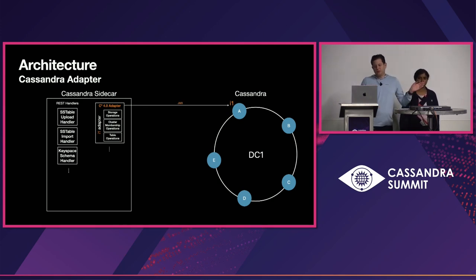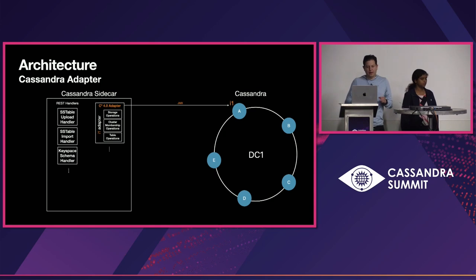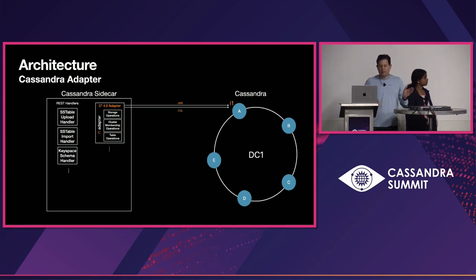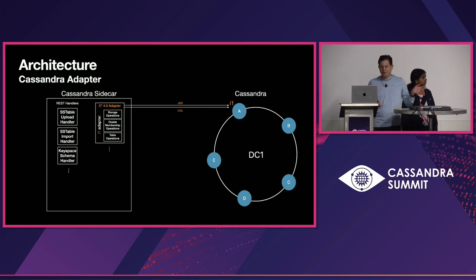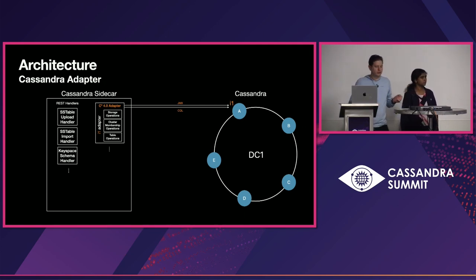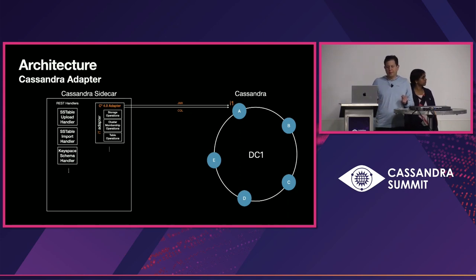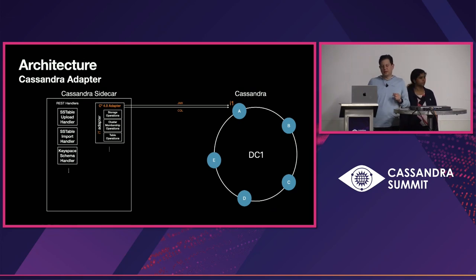The way we talk to Cassandra is via JMX and CQL. The adapters give us the interfaces to talk to Cassandra — we have interfaces for storage and for cluster operations, all abstracted for different versions of Cassandra.